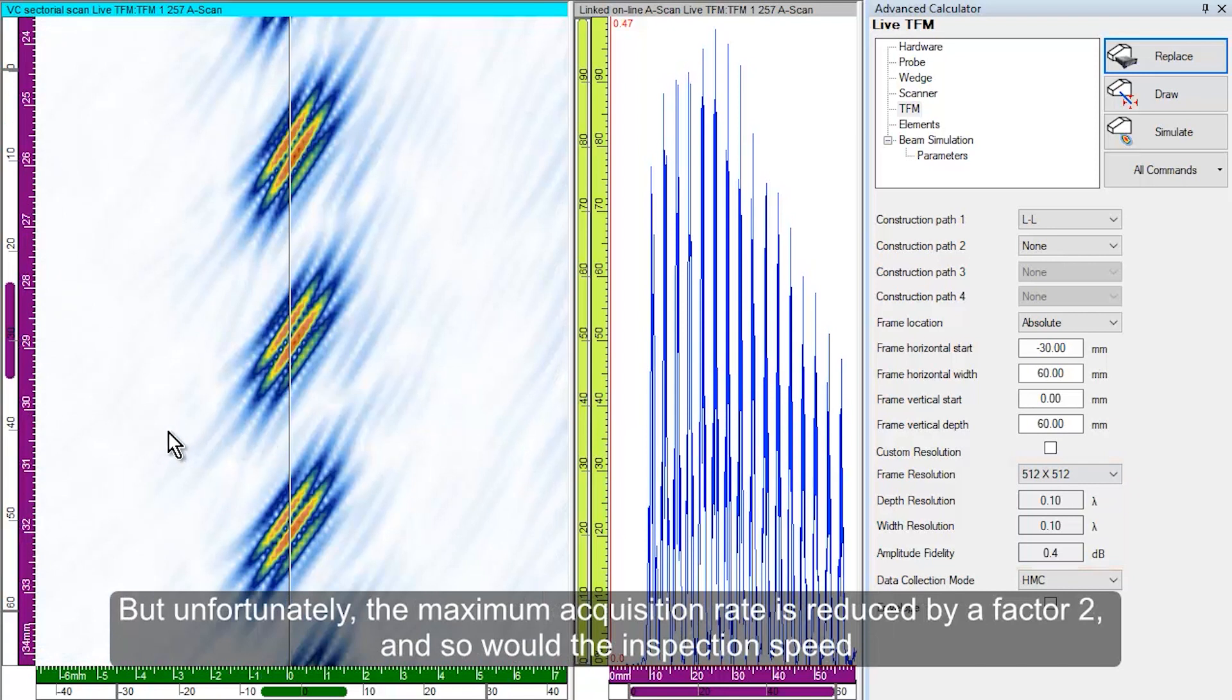But unfortunately, the maximum acquisition rate is reduced by a factor of 2, and so would the inspection speed.